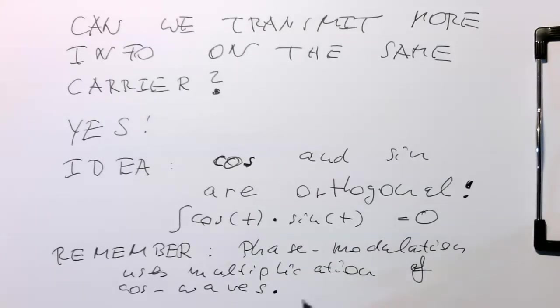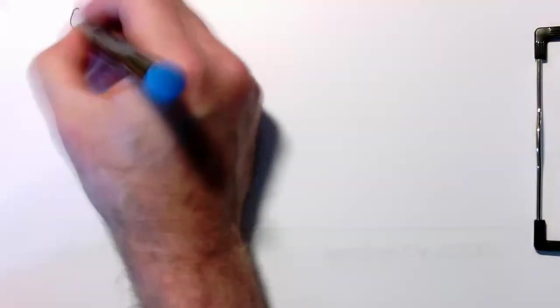So then obviously because of this idea, if we're transmitting also sine waves, then they should not interfere with the cosine waves. So this leads us to the idea of quadrature modulation.